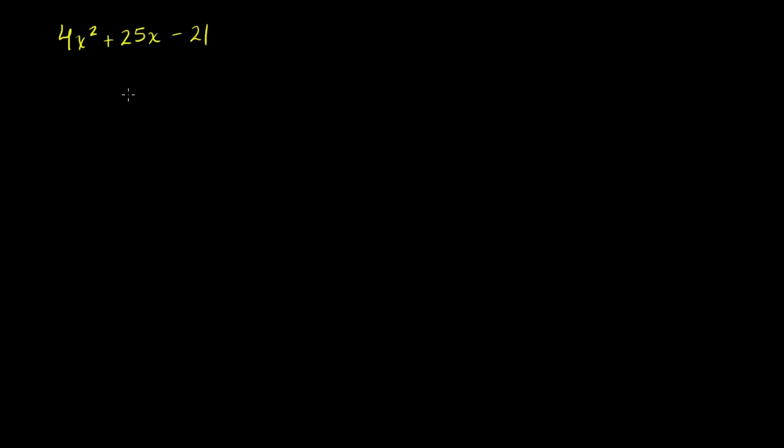So what we need to do here is we need to think of two numbers. We're going to think of two numbers, a and b, where a times b is equal to 4 times negative 21. So a times b is going to be equal to 4 times negative 21, which is equal to negative 84. And those same two numbers, a and b, a plus b, need to be equal to 25.